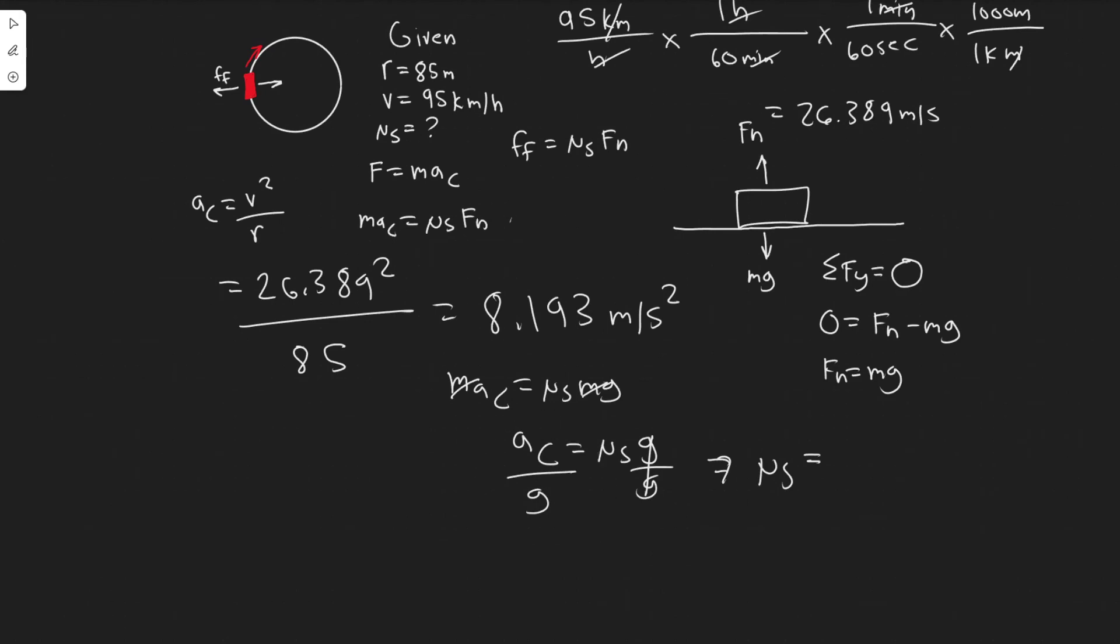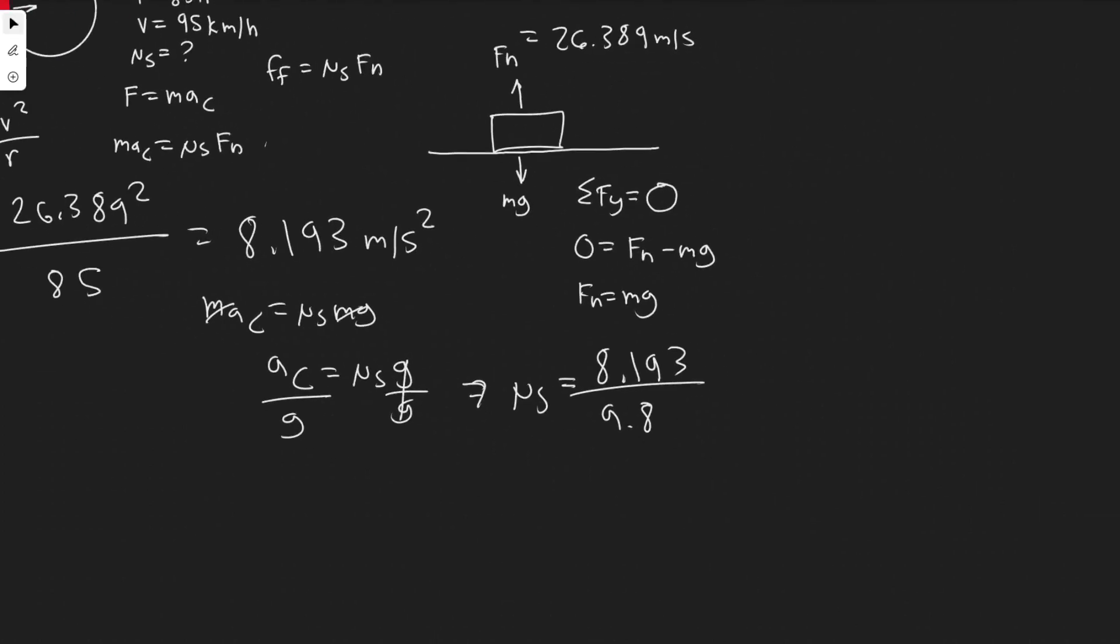We have 8.193 divided by 9.8. Let's go ahead and do that, so 0.836, we'll say 0.836, and then it's about 0.84. A good check is we know we're right or we're in the right direction because it's between zero and one.